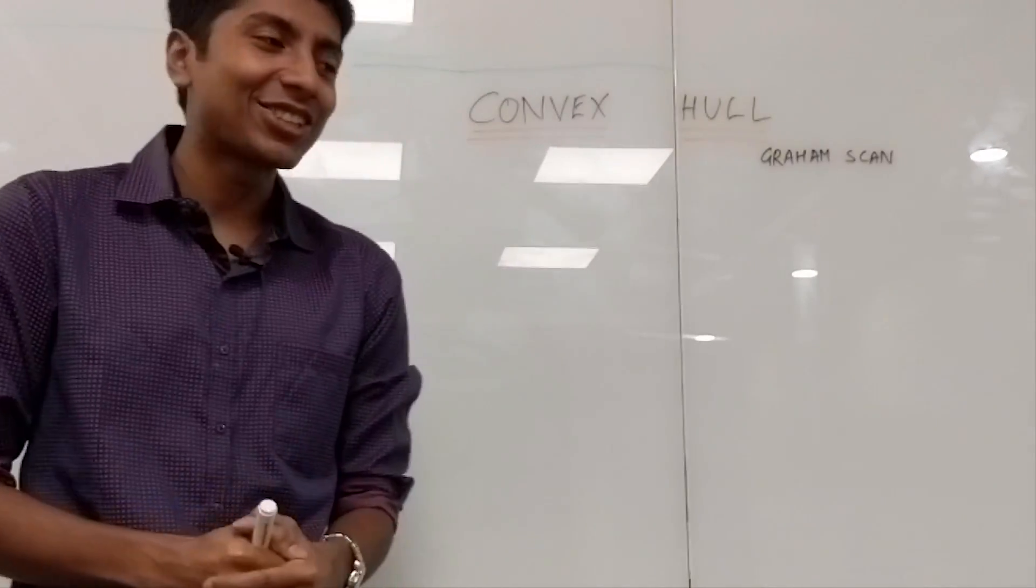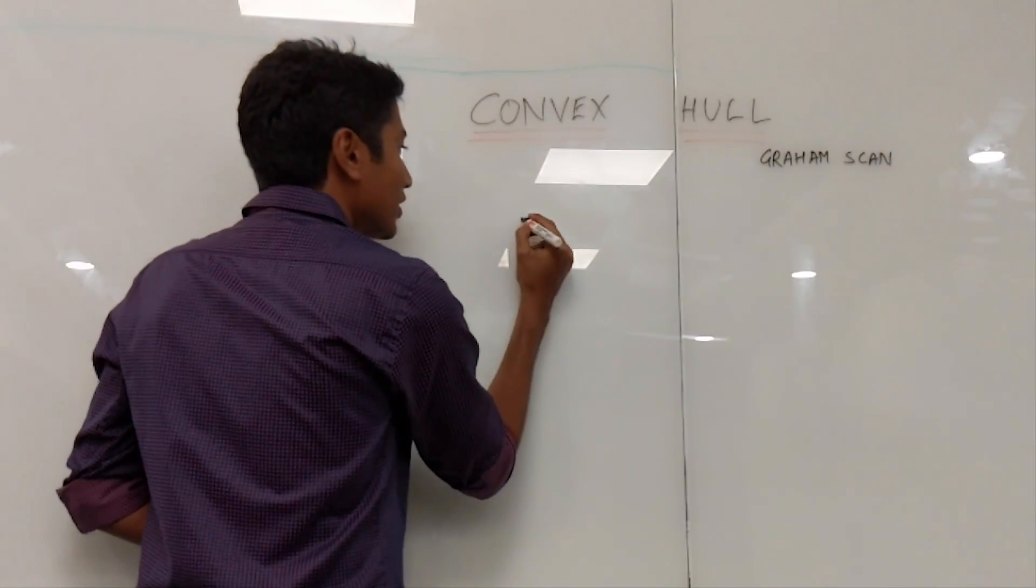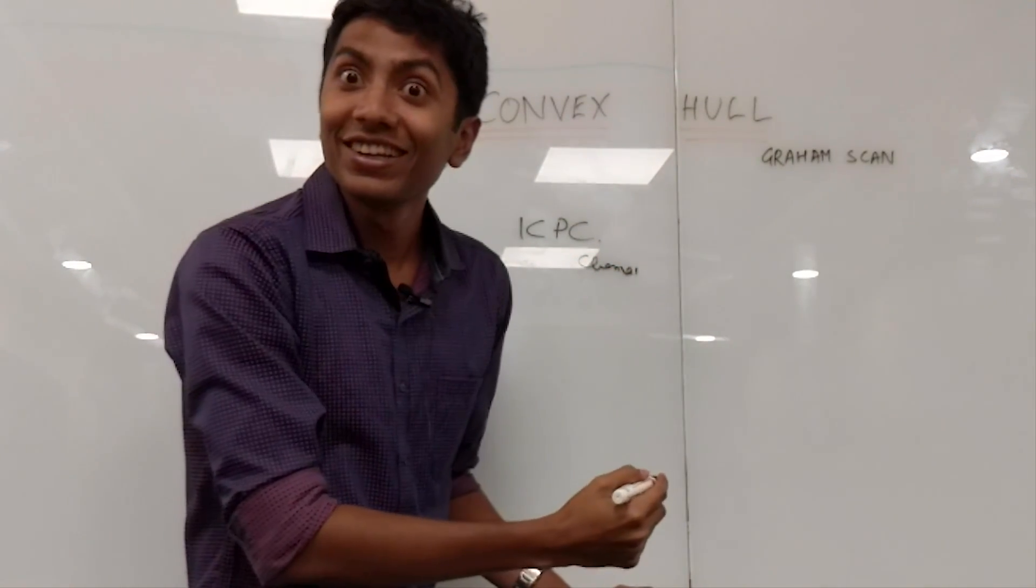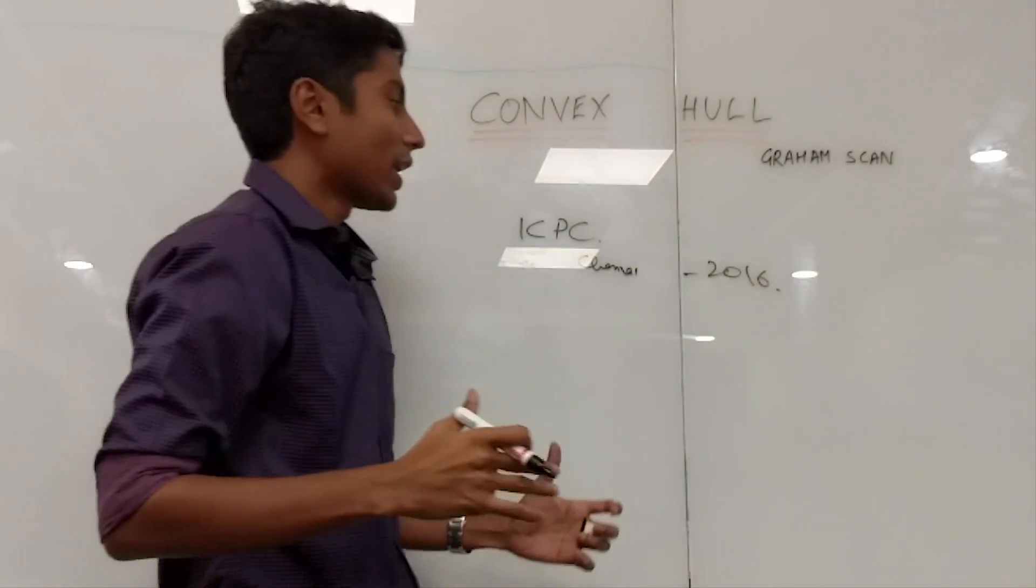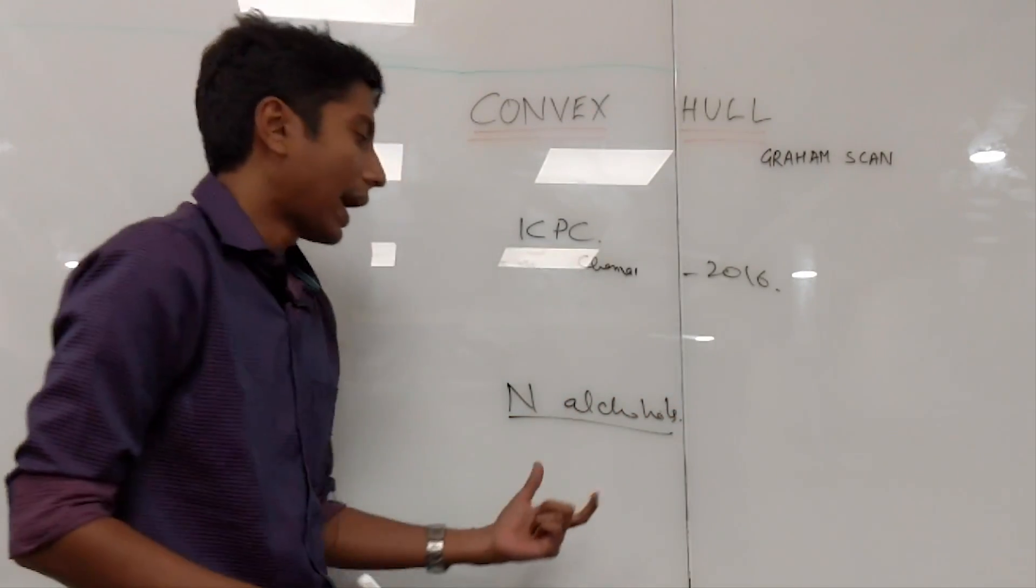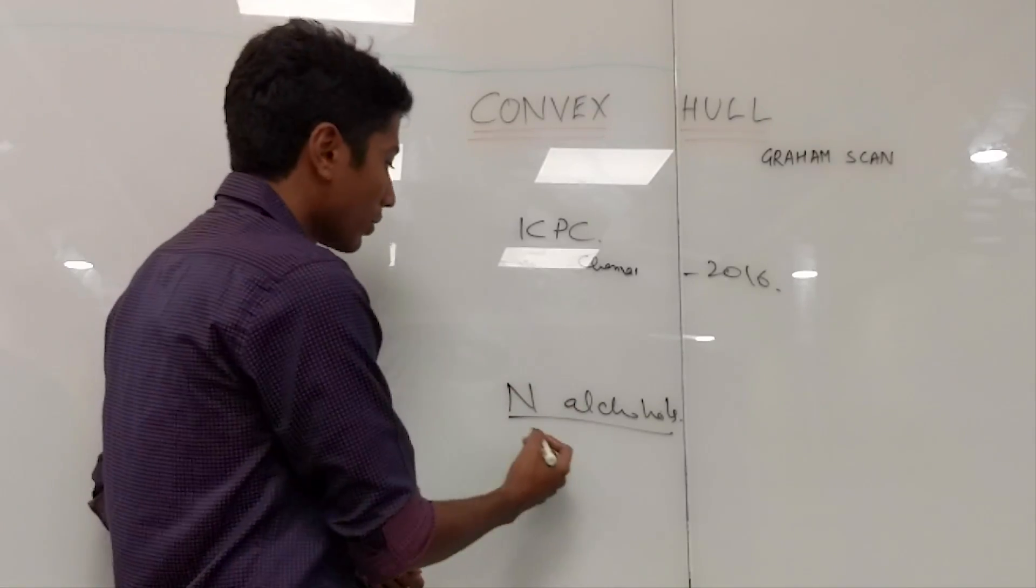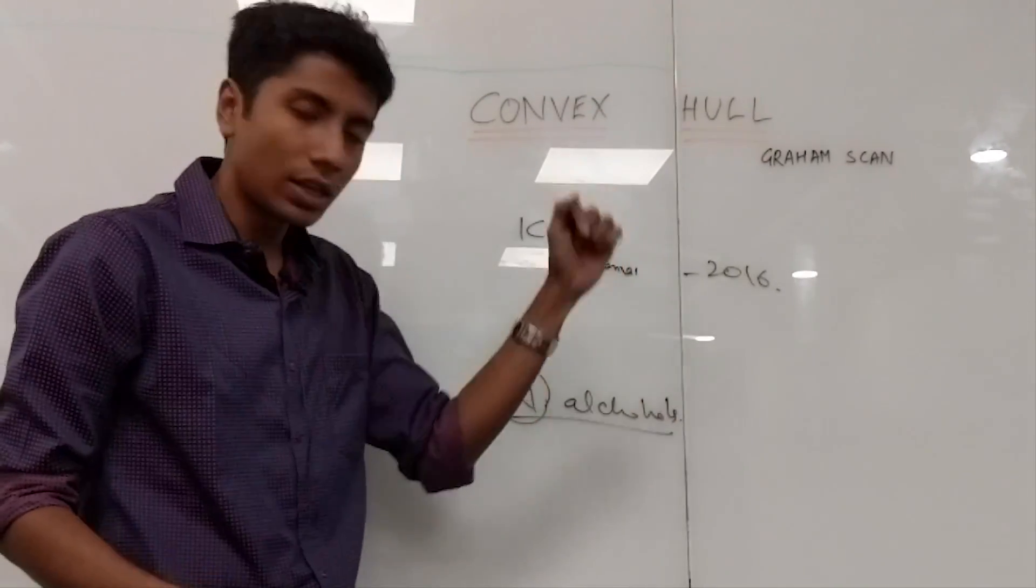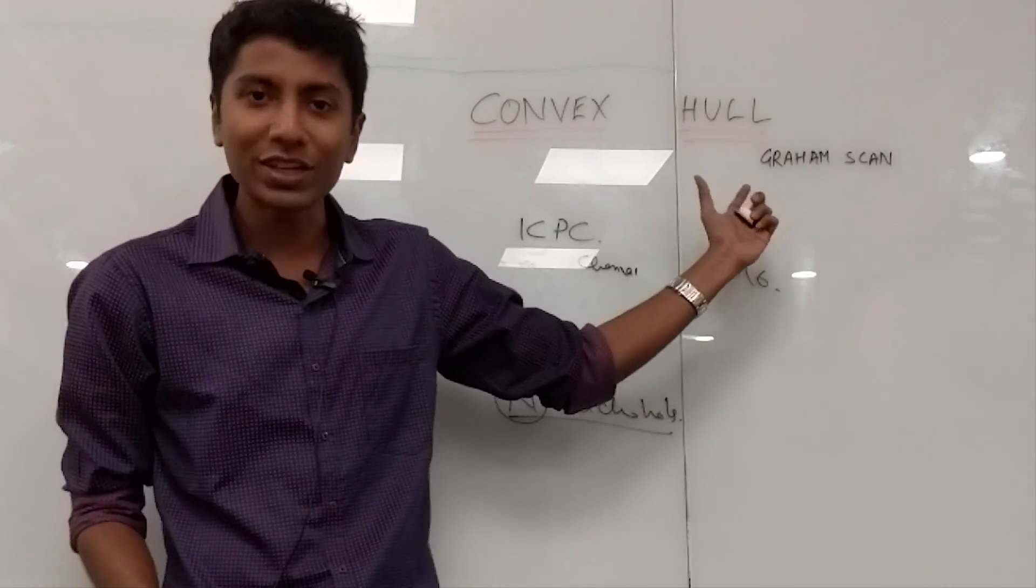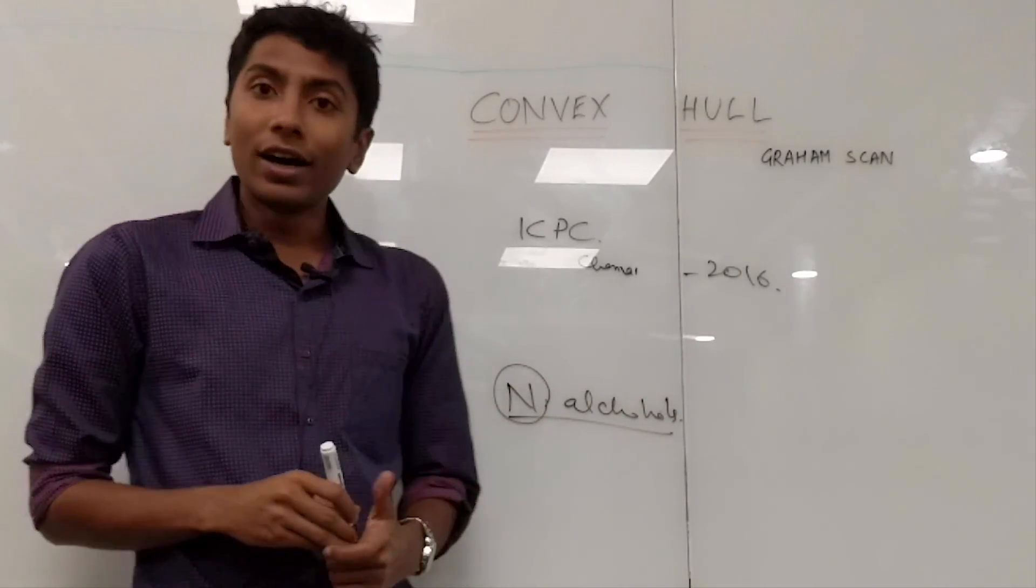Thanks Aman for the fantastic lecture on convex hull with Graham scan. We actually have a problem for you guys. There's an ICPC regionals thing, Chennai, 2016. This problem has you with n alcohols, and what you need to do is you need to buy a subset of these n alcohols such that you can form all the n alcohols using that set. There's a link in the description below for this question, and you should try to solve this. It's solved using convex hull, but we are going to be making the next video on the solution for this problem. So until next time, see you.